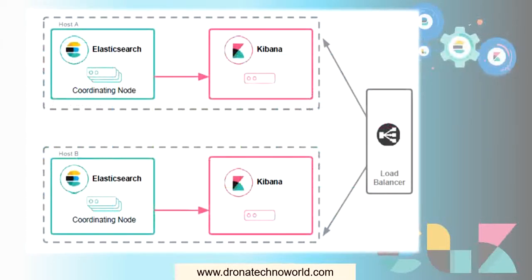We saw two types of architecture: the simple basic one with Beats, Elasticsearch, and Kibana, and then adding the Logstash component. You can keep adding other components based on your project needs. But how about high availability — if one node goes down, how do we achieve that? For that purpose we create one host machine holding Elasticsearch and Kibana, and another host machine also with Elasticsearch and Kibana. Both are part of a bigger cluster and can be accessed through a load balancer to achieve high availability.